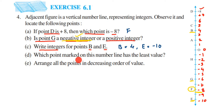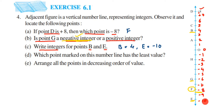The fourth question is: which point marked on this number line has the least value? Remember, on a number line negative integers have the least value. But among negative integers, the one with the greatest number has the least value. On this number line we have plus 8 on one side and minus 10 on the other. All positive integers are greater than negative integers, so we look at the negative side. Minus 1 is the greatest among the negative integers.